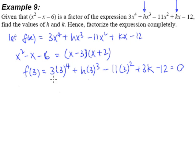Working out these numbers, we'll get this is 243 plus 27h minus 99, and of course this will give us 3k minus 12 is equal to 0.